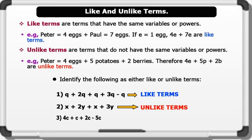Three: 4C plus C plus 2C minus 5C. They all have same variable C and are called like terms. That's brilliant.